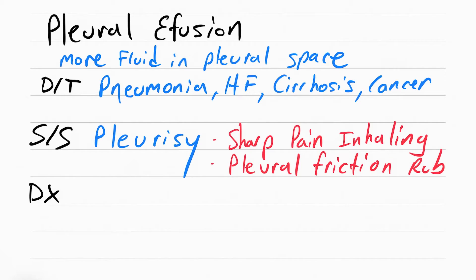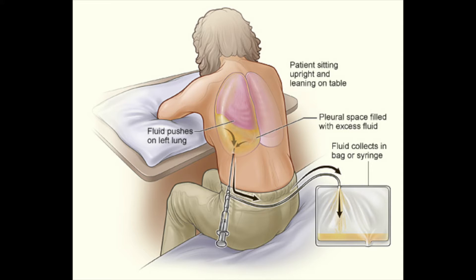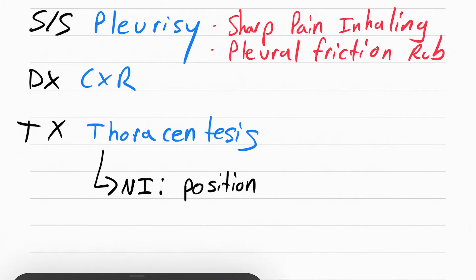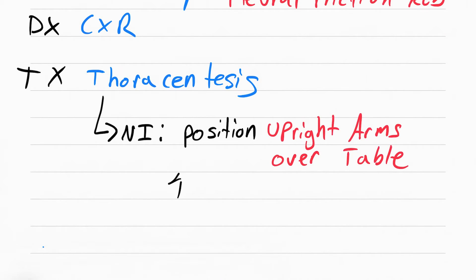The diagnostic is a chest x-ray and the treatment is something called thoracentesis. This is when the doctor goes into the patient's pleural space with a needle and withdraws some of the fluid, sometimes for diagnostic testing but also as therapeutic treatment. Your job during thoracentesis is to position the patient upright with their arms over a table. You also want to note how much is coming out.